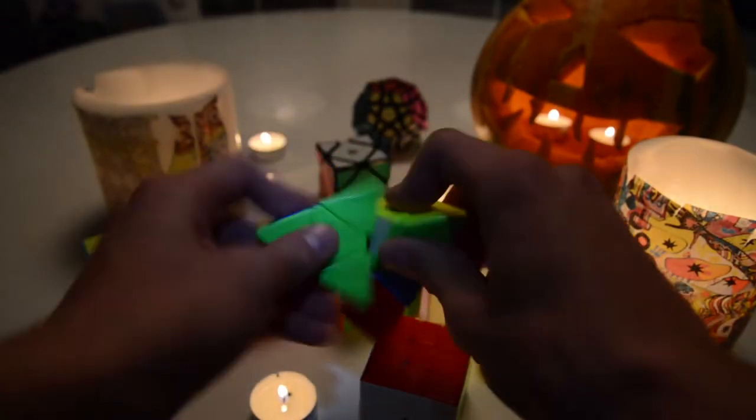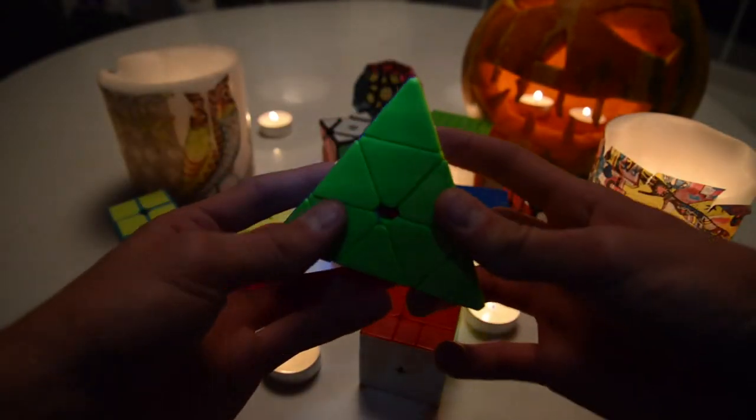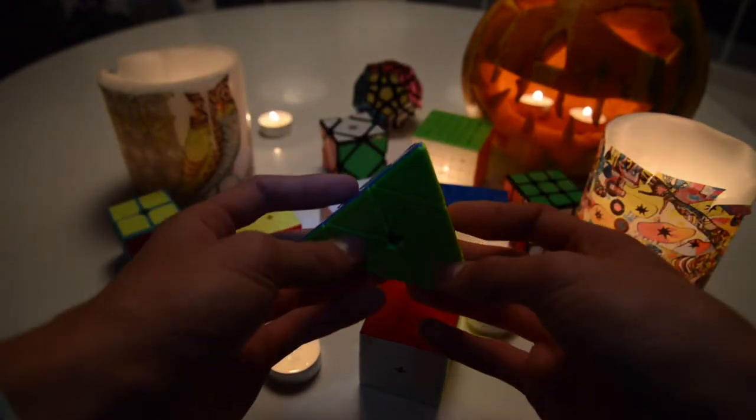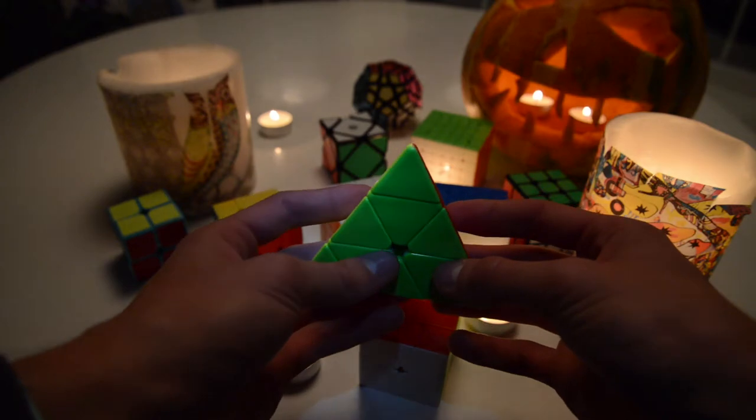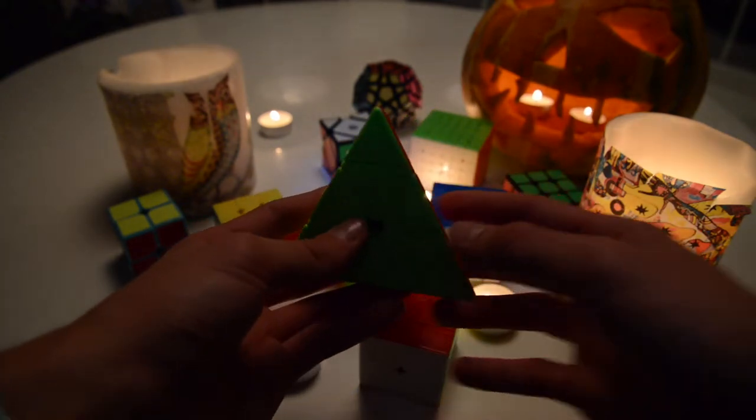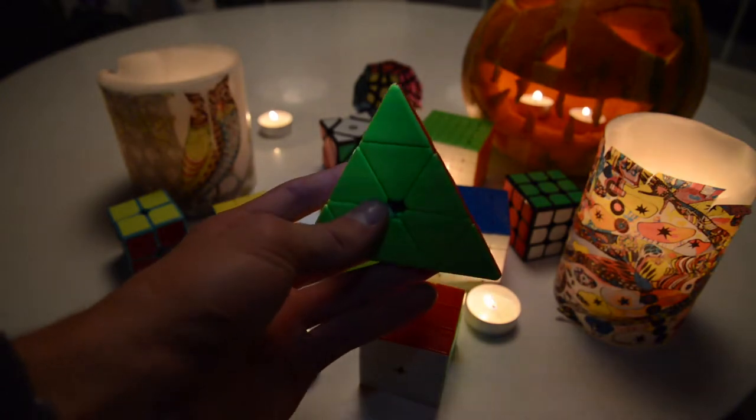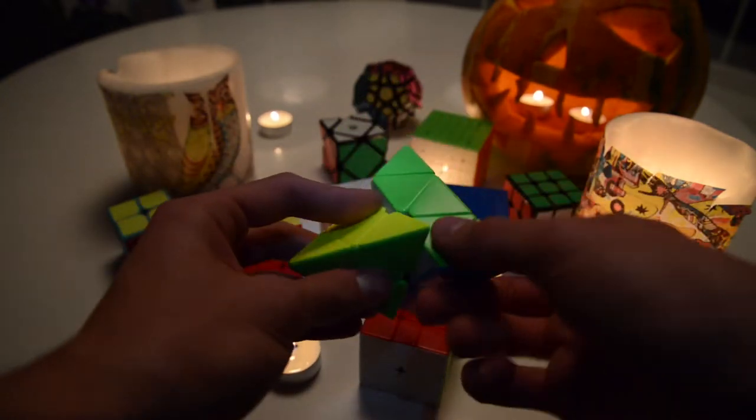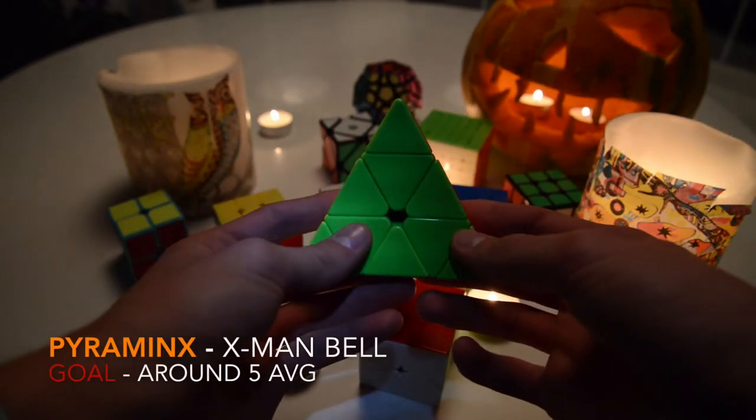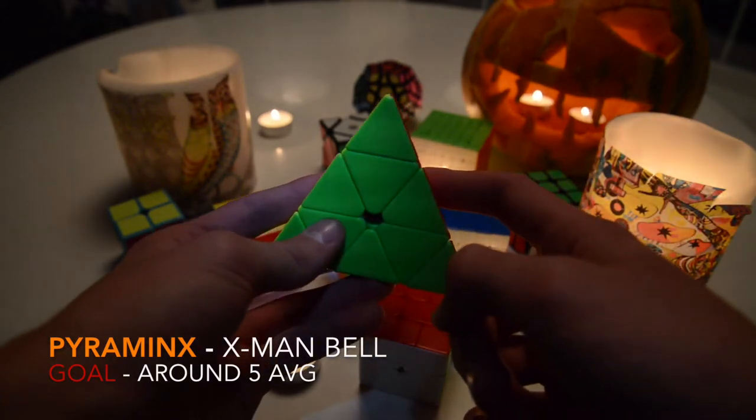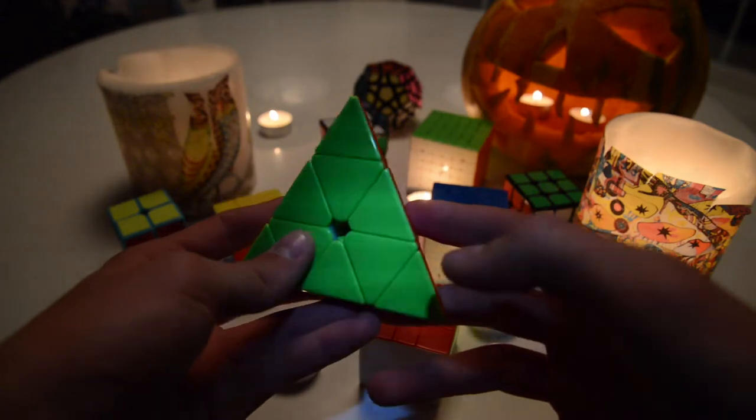Next up the Pyraminx. This is the Qi X-Men belt Pyraminx and I've learned the last 4 edges method. If I get some good one flip cases, I am hoping to get around 5 second average. I really want the podium in this little sucker because it's a good event I really like.